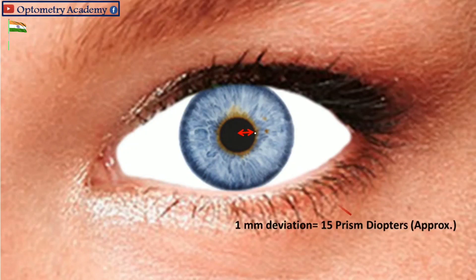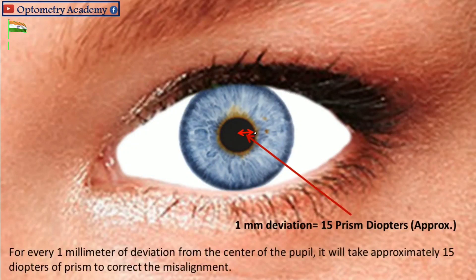1 mm of deviation equals approximately 15 prism diopters. For every 1 mm of deviation from the center of the pupil, it will take approximately 15 prism diopters to correct the misalignment.